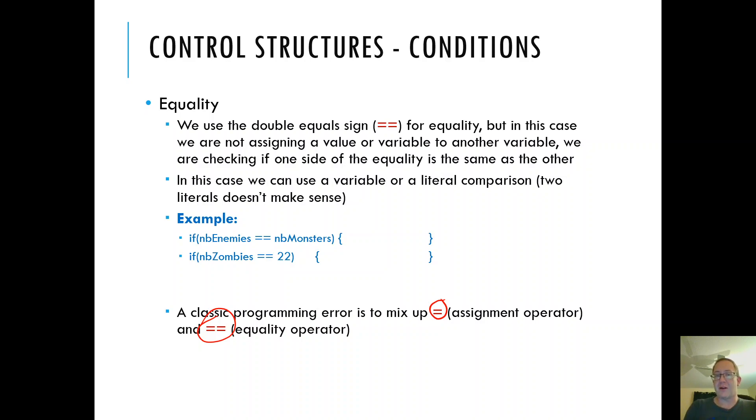So here's what it kind of looks like. If the number of enemies is equal to number of monsters, do whatever is in here. Or I could say if the number of zombies is equal to 22, then do whatever. I can have a variable. I can have a constant. I can have a function returning a variable. It doesn't matter.